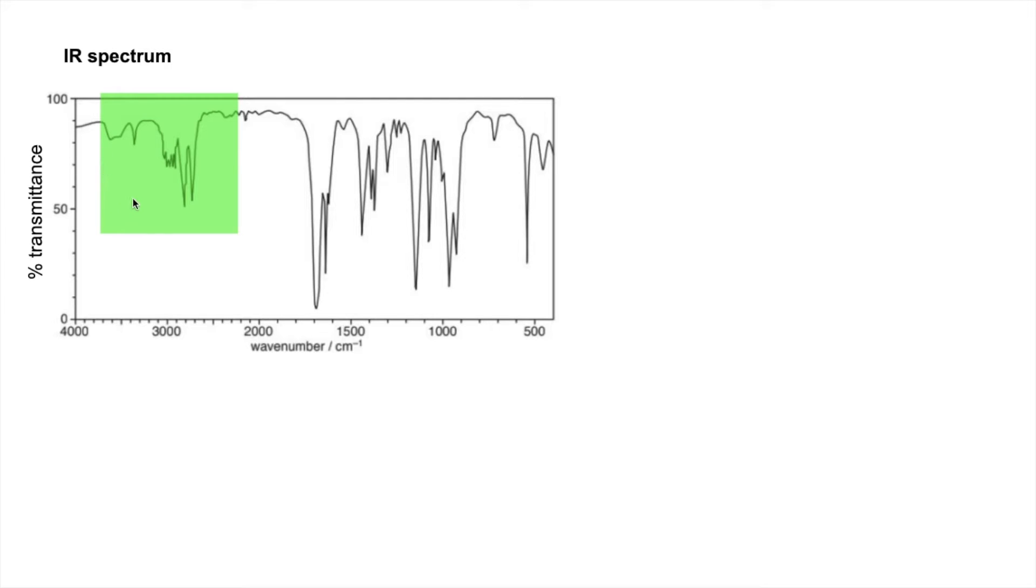And an OH of a carboxylic acid is very broad. It starts about 2,500 and goes all the way to nearly 3,500 wavenumbers. Well we haven't got that. These are just CHs, and so therefore what we can say is we don't have an OH. So I would actually write that on the spectrum.